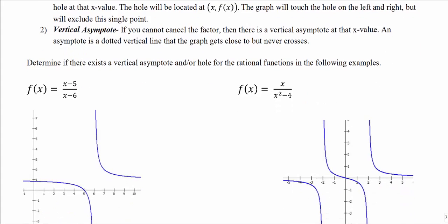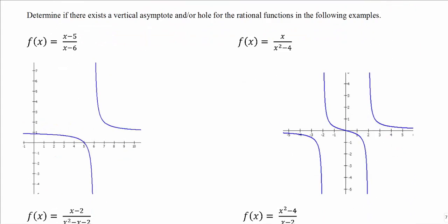Our first function is f(x) = (x - 5) / (x - 6). To find the domain, take the denominator and set it equal to zero. Add 6 to both sides and you get x = 6, which we must exclude from the domain. The question is: does it manifest as a vertical asymptote or as a hole in the graph?